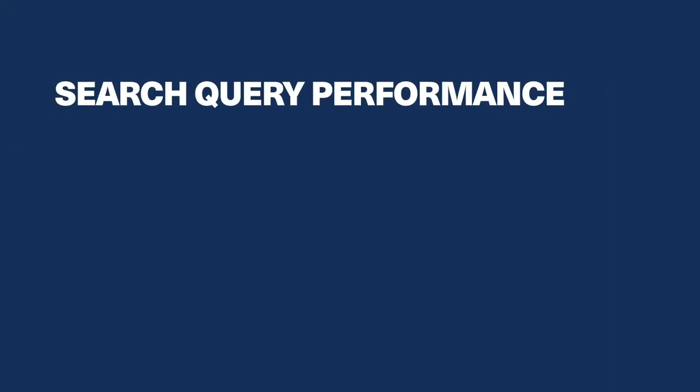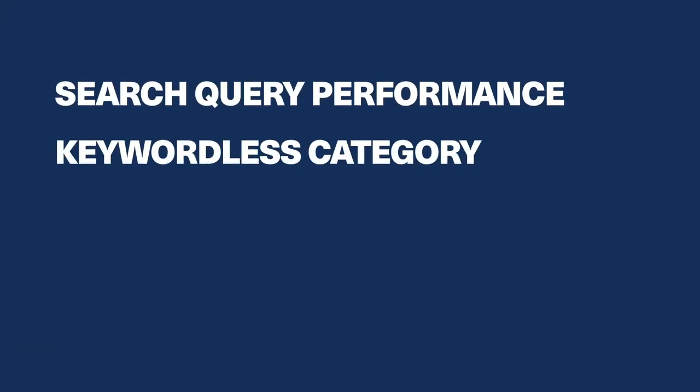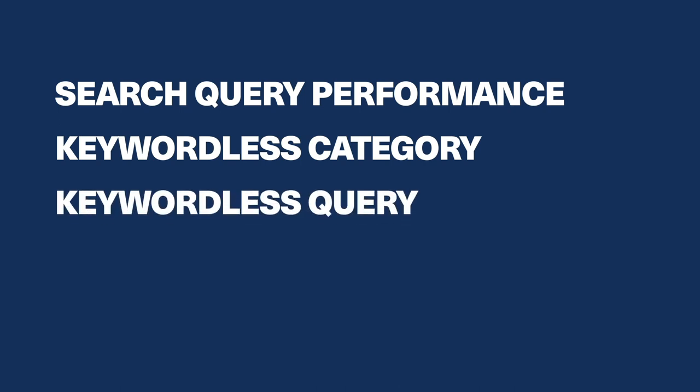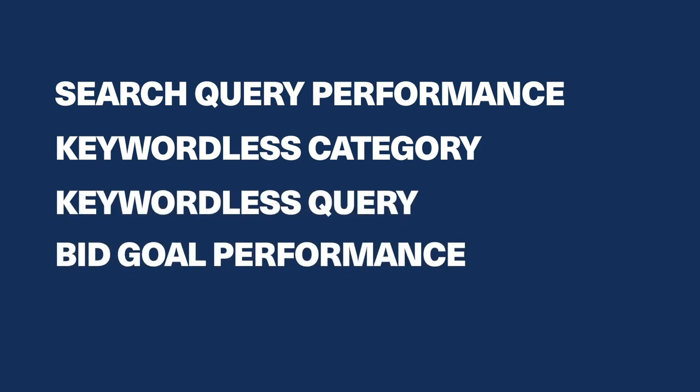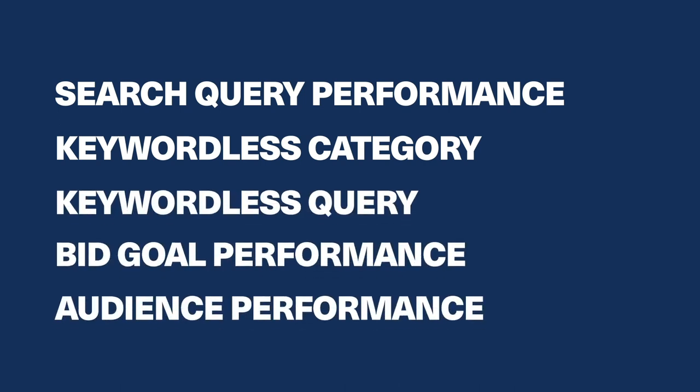In one more Google Ads update, you can now analyze campaign results using new breakdowns at the account, campaign, and ad group level, including search query performance, keyword-less category, keyword-less query, bid goal performance, and audience performance.